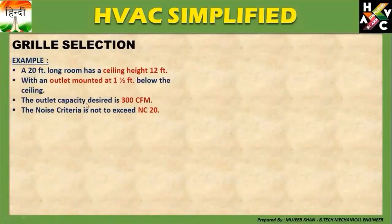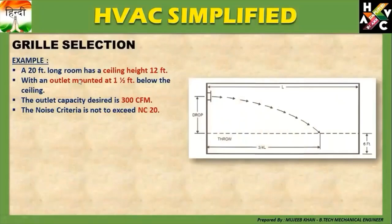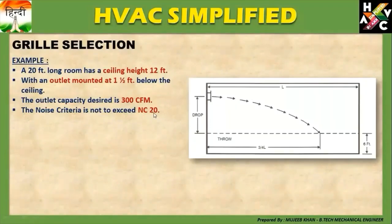आइए अब हम एक example देखते हैं: A 20 feet long room has a ceiling height of 12 feet, with an outlet mounted at one and a half feet below the ceiling। The outlet capacity desired is 300 CFM। The noise criteria is not to exceed NC 20। यहां room की wall-to-wall distance 20 feet है, ceiling height 12 feet है, और outlet one and a half feet below the ceiling mount किया गया है।